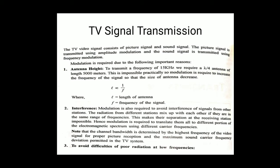So why is modulation required? There are three points. First, antenna height: to transmit a frequency of 15 kilohertz, we require a lambda-by-4 antenna of length 5000 meters. So for 15 kilohertz frequency transmission, we require a length of 5000 meters - this is too large an antenna and is impossible practically.